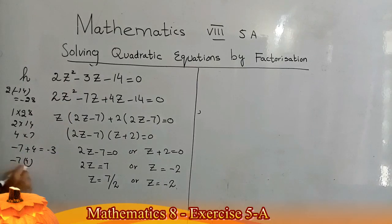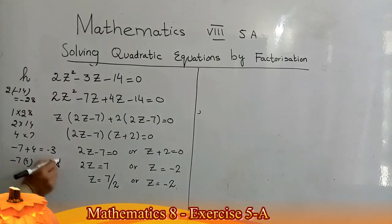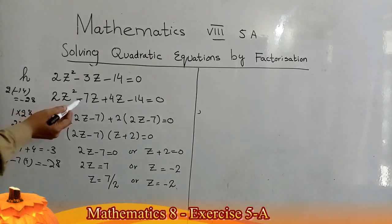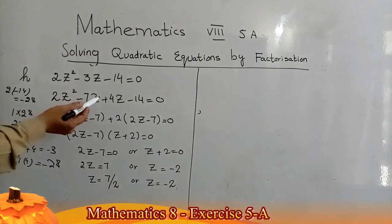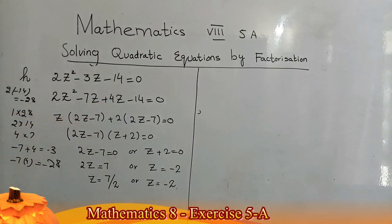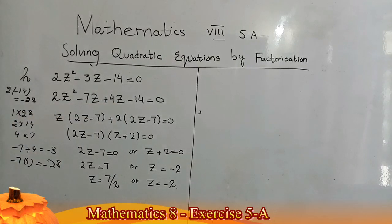I find the factors of 28 and select −7 and 4 as the coefficients of z, because −7 + 4 = −3 (the middle term) and −7 × 4 = −28. So: 2z² − 7z + 4z − 14 = 0.